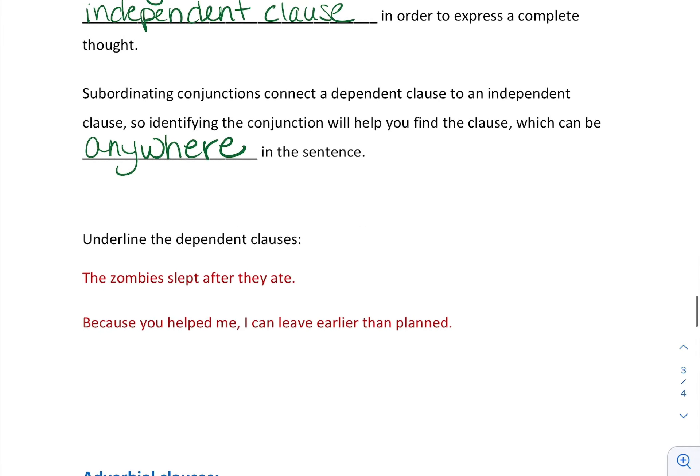Let's take a look. Tell me where the dependent clauses are: "The zombies slept after they ate." It may help you to identify the complete one. Can you see the complete one? The zombies slept. So the dependent clause is 'after they ate.' Here we go, here's our subordinating conjunction. The second clause is 'they ate,' but the whole thing 'after they ate' doesn't make sense by itself. It does have a subject and it does have a verb, but it doesn't make sense by itself.